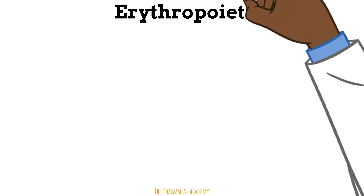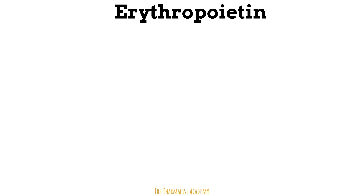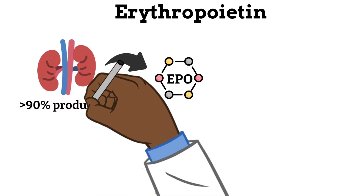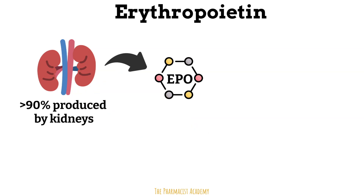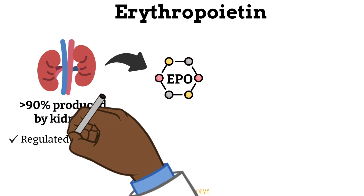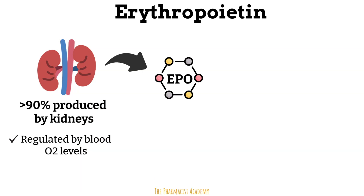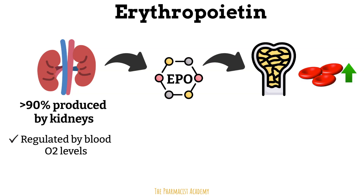The majority of the EPO in your body is produced by the peritubular cells of the kidneys, but smaller amounts may also be produced by the liver, the bone marrow, spleen, lungs, and brain. The production of EPO by the kidneys depends mainly on the amount of oxygen in the blood. The job of EPO, after it's produced by the kidney, is to go to the bone marrow and stimulate the production of red blood cells.